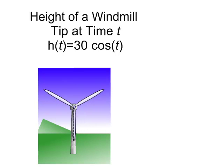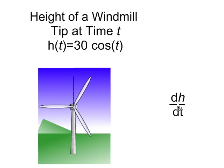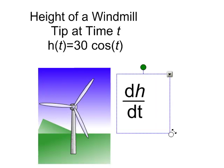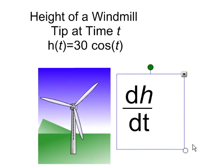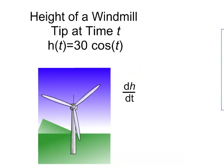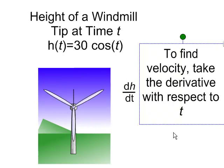So in this case, you're not going to be taking the derivative of y with respect to x. You're going to be taking the derivative of h with respect to t. So we're interested in the rate of change of height as time changes. And expressed in words, to find the velocity, take the derivative with respect to t.